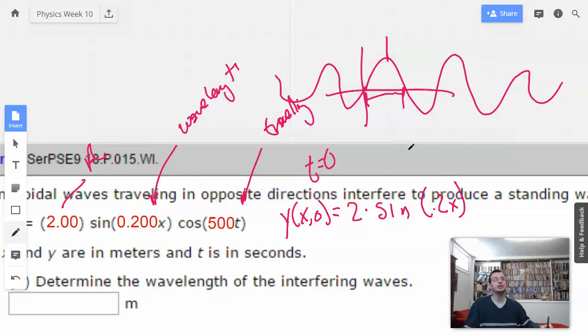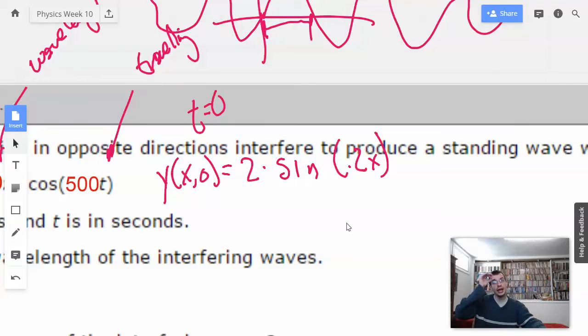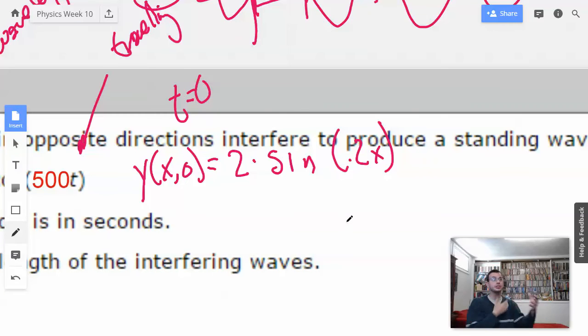Two points where it repeats. Well, we know that sine repeats for every 2 pi: 0, 2 pi, 4 pi, 6 pi, etc. So I'm going to choose two repeating points, specifically 0 and 2 pi. I like to choose 0 because it's usually the easiest.